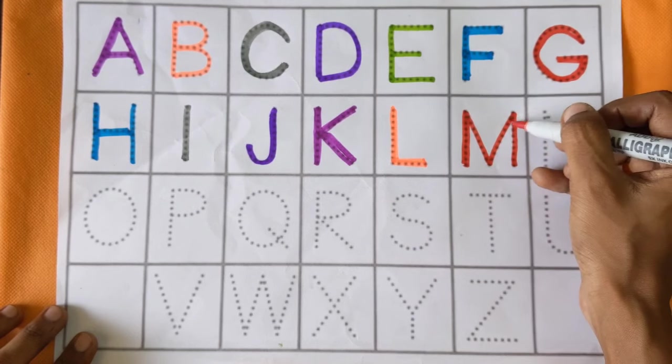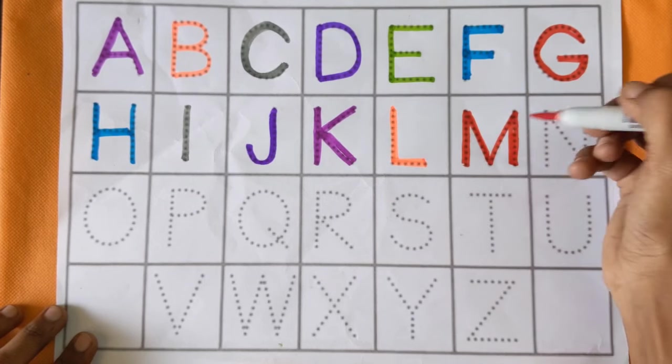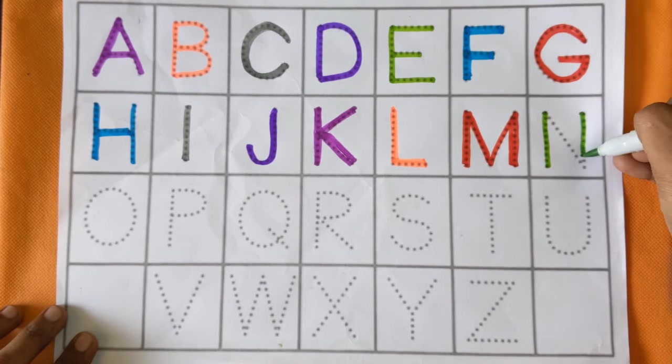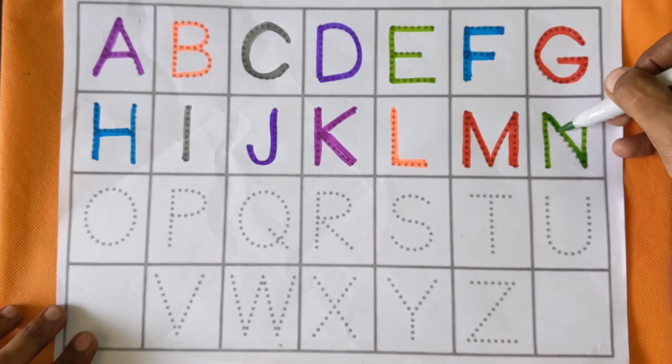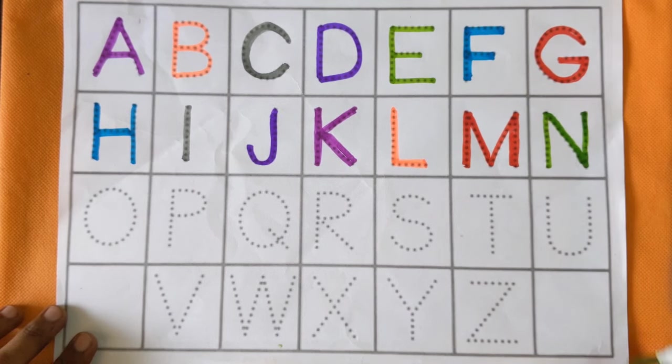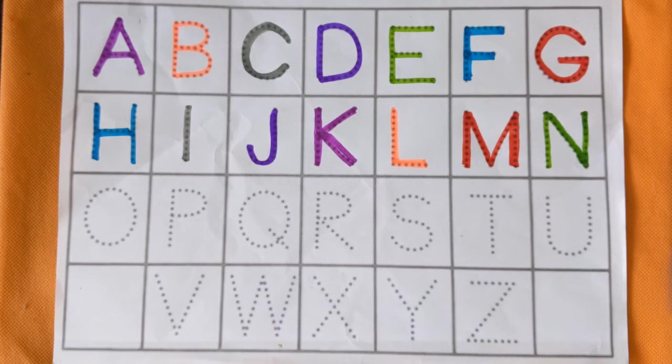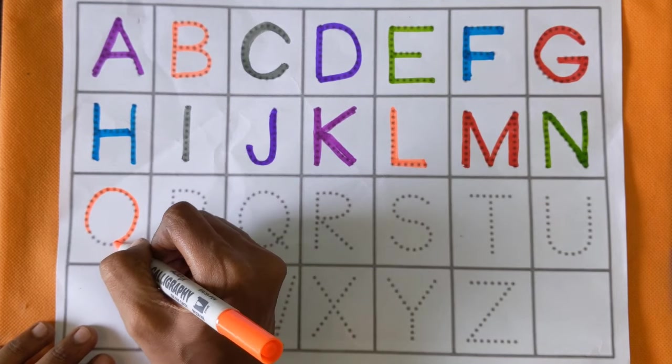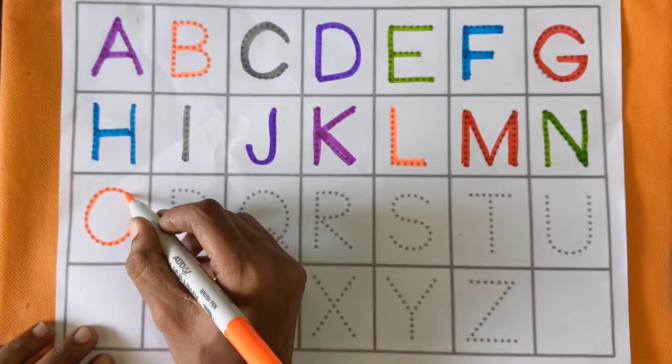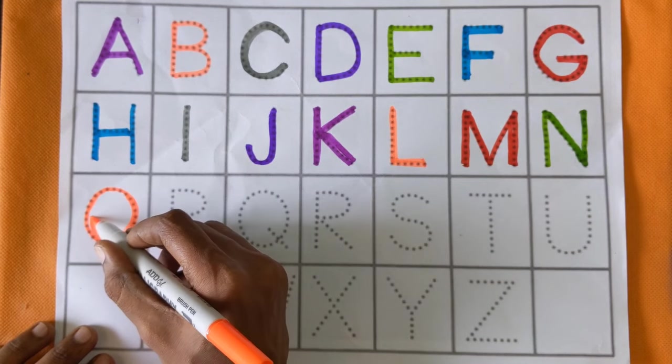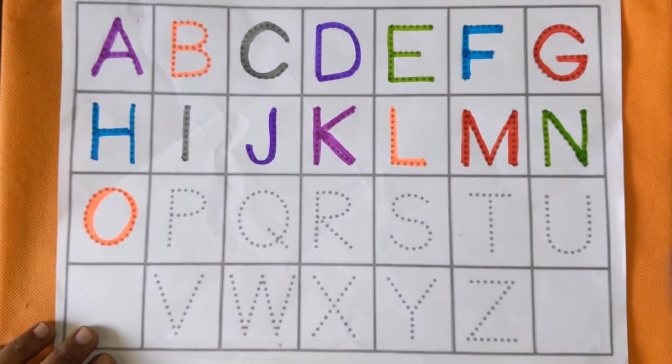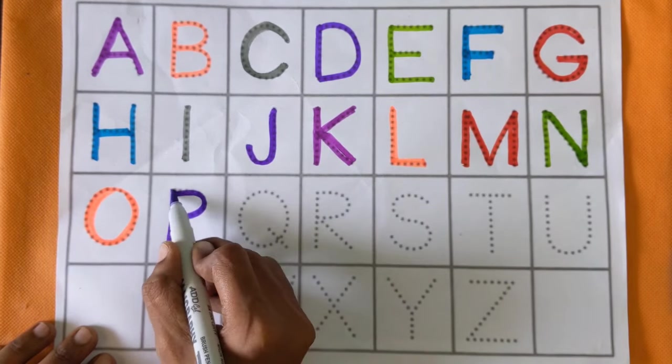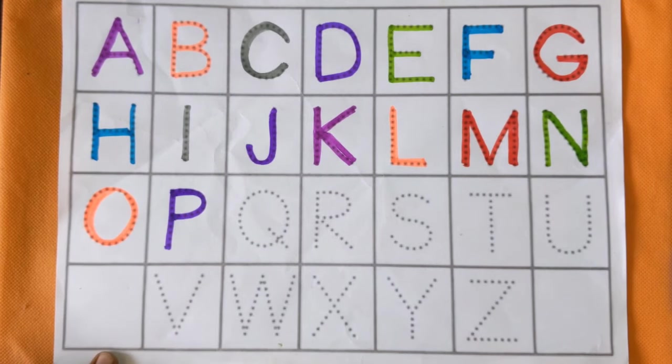M for mango and M for mother, red color. After M, next is N. N for nest and N for necklace, light green color. After N, next is alphabet O. O for octopus and O for ox, orange color. It's P. P for penguin and P for parrot, violet color.